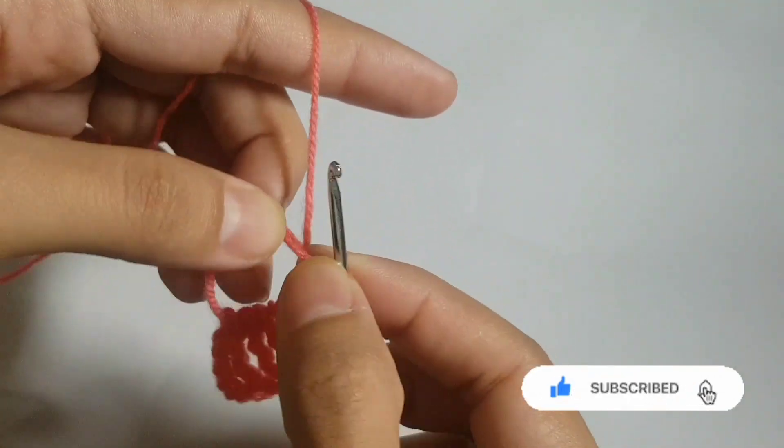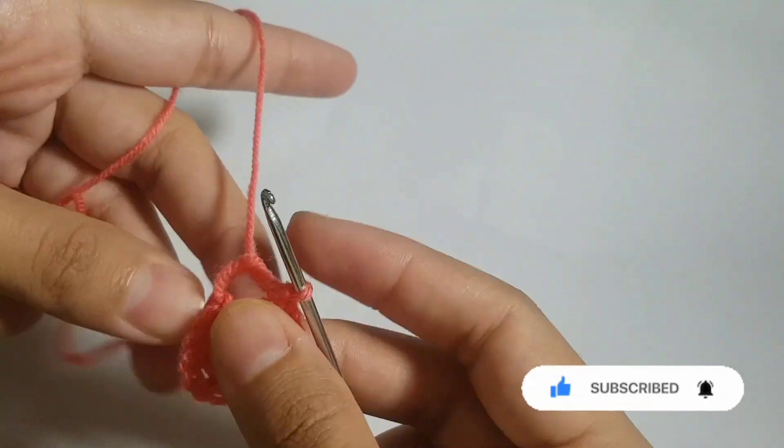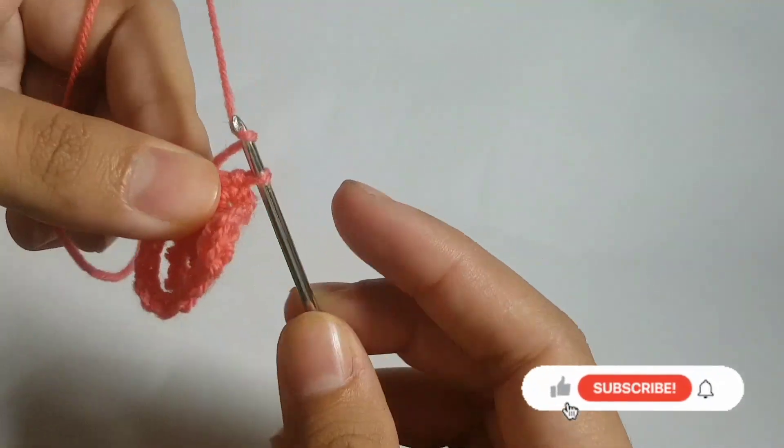Then we will pull the end of the yarn to decrease the circle. After decreasing the circle, we will make six chains and follow the same process.